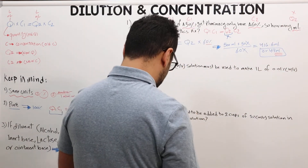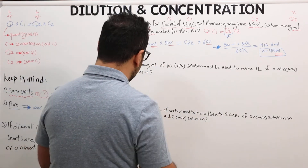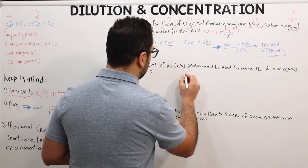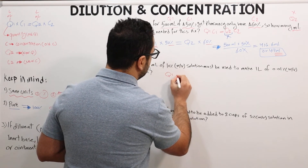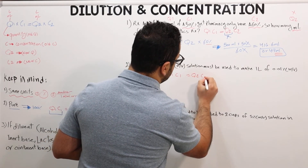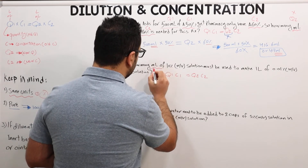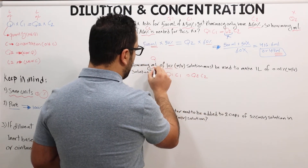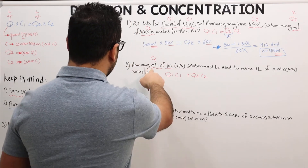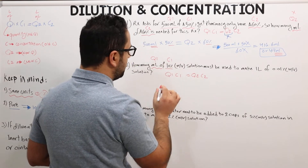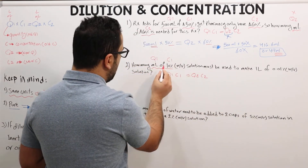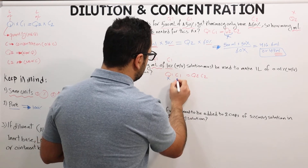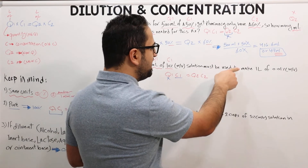Question number 2: how many mL of a 10% solution must be used to make 1 L of a 0.01% solution? Writing the equation: Q1 × C1 = Q2 × C2. C1 is 10%, Q1 is the unknown (X). Q2 is 1 L and C2 is 0.01%. Notice the unit is different — Q2 is given in liters but we need milliliters, so a conversion is needed before solving.